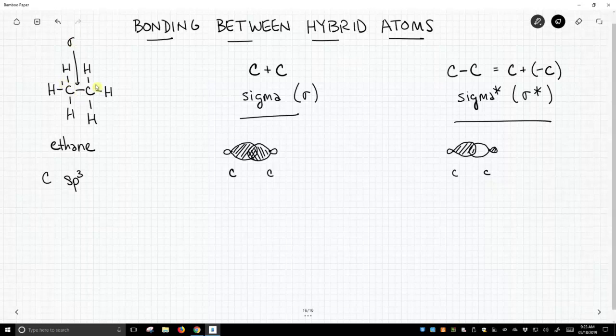So let's label these carbons. There's one and two, and let's go to our pictures. So for the bonding orbital, we're going to add these two hybrids together. So here we have drawn the sp3 hybrid for carbon one, and we have the sp3 hybrid for carbon two.